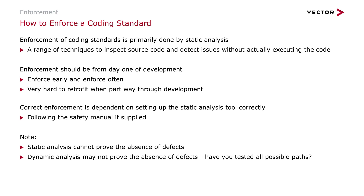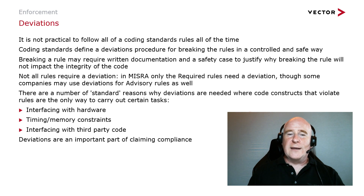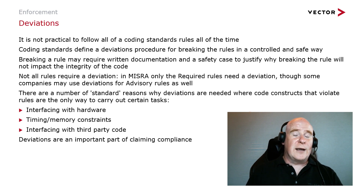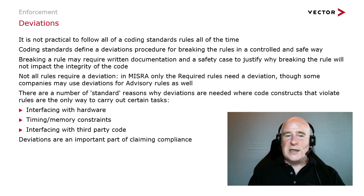Note that static analysis cannot prove the absence of defects. Dynamic analysis may not be able to prove the absence of defects either — have we possibly tested all the possible program paths and all possible situations the program could be in? It's not practical to follow all of the coding standard rules all the time. Coding standards usually define a deviations procedure for breaking the rules in a controlled and safe way, which may require documentation to justify why. Not all rules will require deviations. There are a number of standard reasons why we might deviate — where we have to write code that violates the coding rules to carry out certain tasks: interfacing with hardware, timing, memory constraints, interfacing with third-party code where we are forced to write code in a particular way.